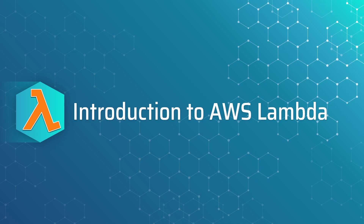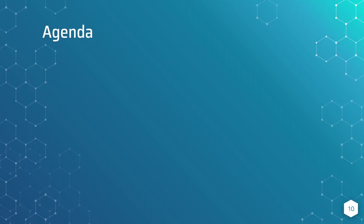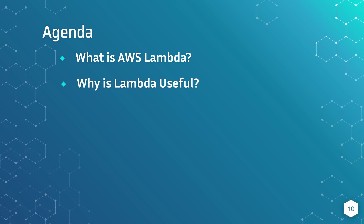In terms of agenda, we're going to start with just a little bit of an overview of what is AWS Lambda. This is also going to include some historical context in terms of how we got from the early 2000s to where we are today. And then we're going to talk about why is Lambda useful — why is this such a hot topic, why is everyone talking about it, and why is it such a valuable skill set to learn?